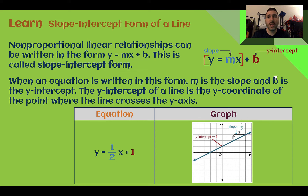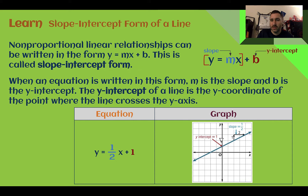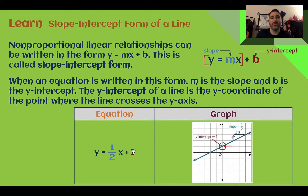Whatever you want to call it. Our new value is b. b is the y-intercept — it's the y-coordinate of the point where the line crosses the y-axis. So we can see it right here on our graph. If we were to draw a line through, it's 1 above, so the y-intercept would be 1, and we would write that here at 1.